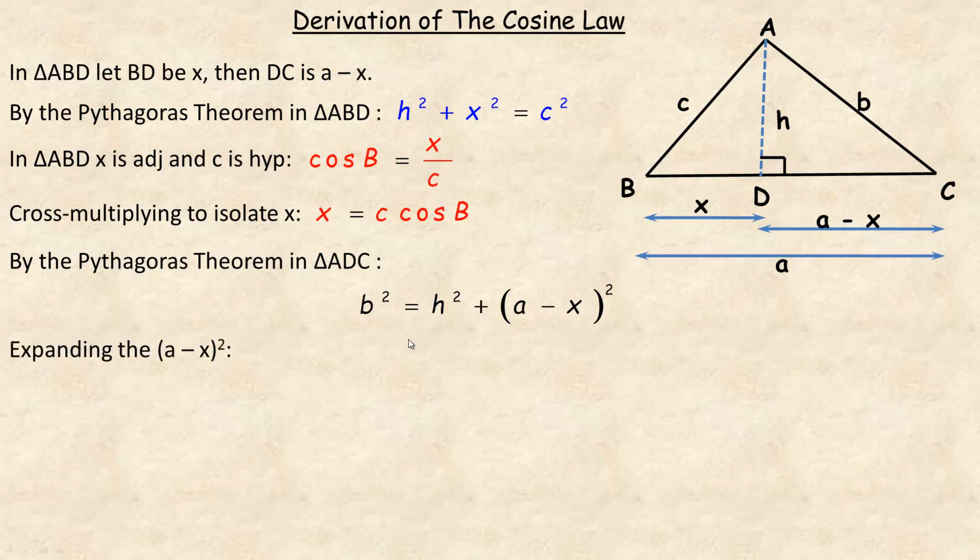So what we're going to do is we're going to expand out the A minus X squared. If you don't know the shortcut for squaring a binomial, this is what it looks like. So A multiplied by A is A squared. And then this product right here would be minus AX. And then this product would be another one the same, minus AX.